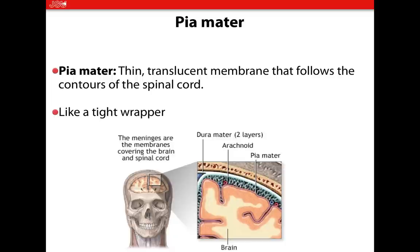Finally, the innermost layer — the pia mater. This is a very thin layer, not very physically strong. Think of it almost like a rubber glove surrounding the brain and the spinal cord. Look at its location — it's almost like a cellophane wrapper surrounding the brain.